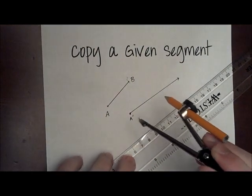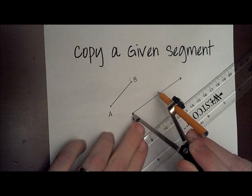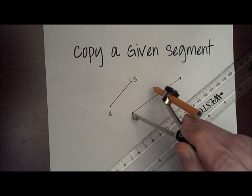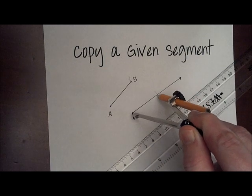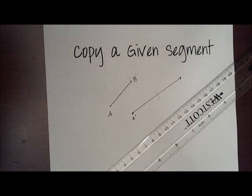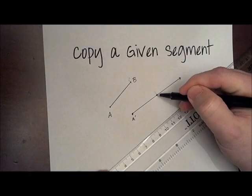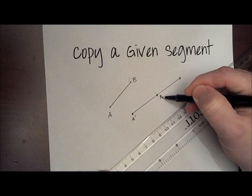Now with your compass at the exact same measure, putting your compass point on the new point A prime, the end of your ray, you're going to strike an arc on that ray. And where that arc intersects the ray, we're going to place our new endpoint. We'll call that B prime.